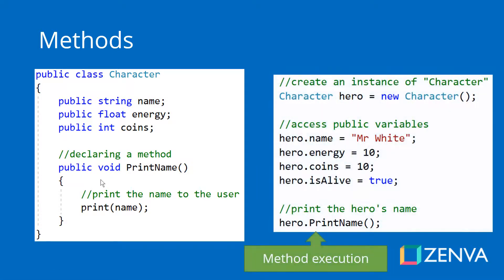If we want to execute that method — to call that method — we need to create an instance of our character. We can assign values to those public variables and then call the method. We can print the hero's name by calling hero.printName, and that is how we call this method.